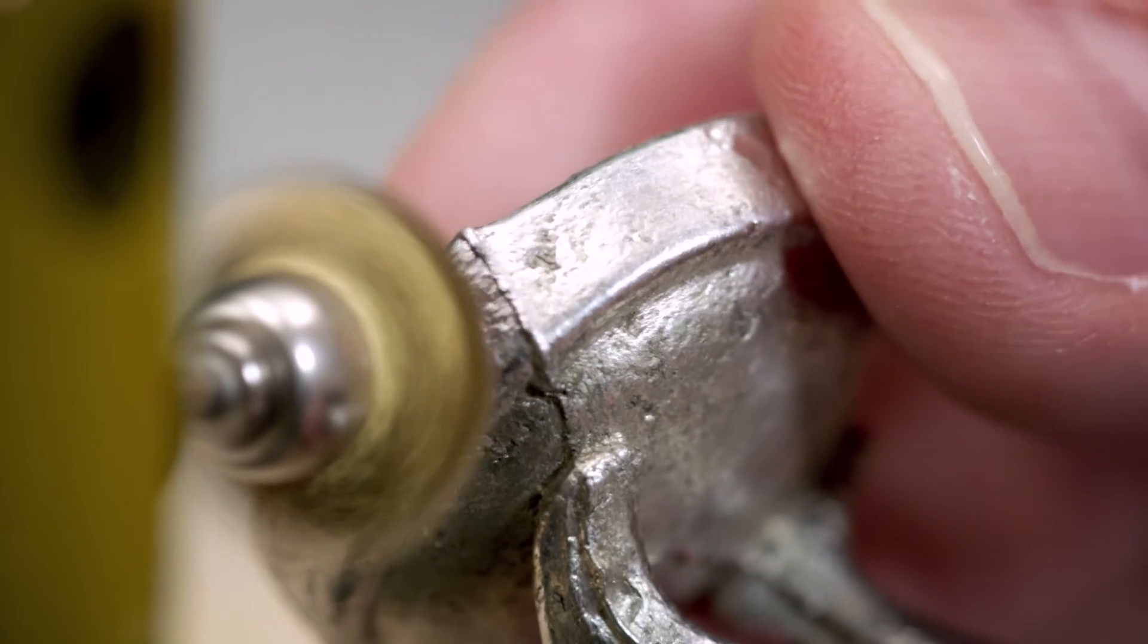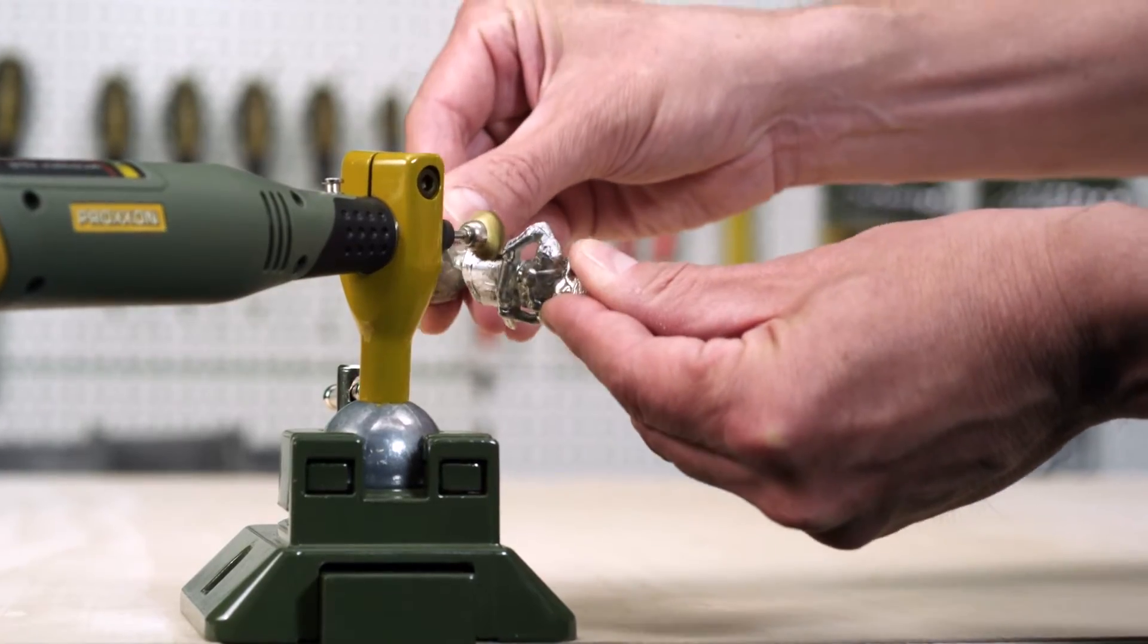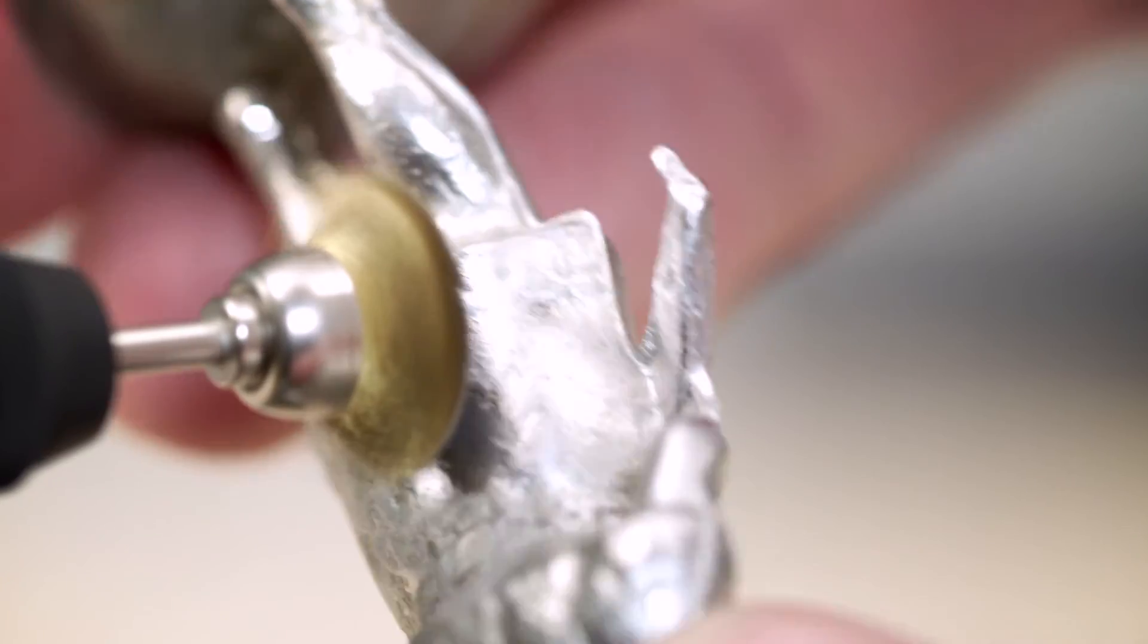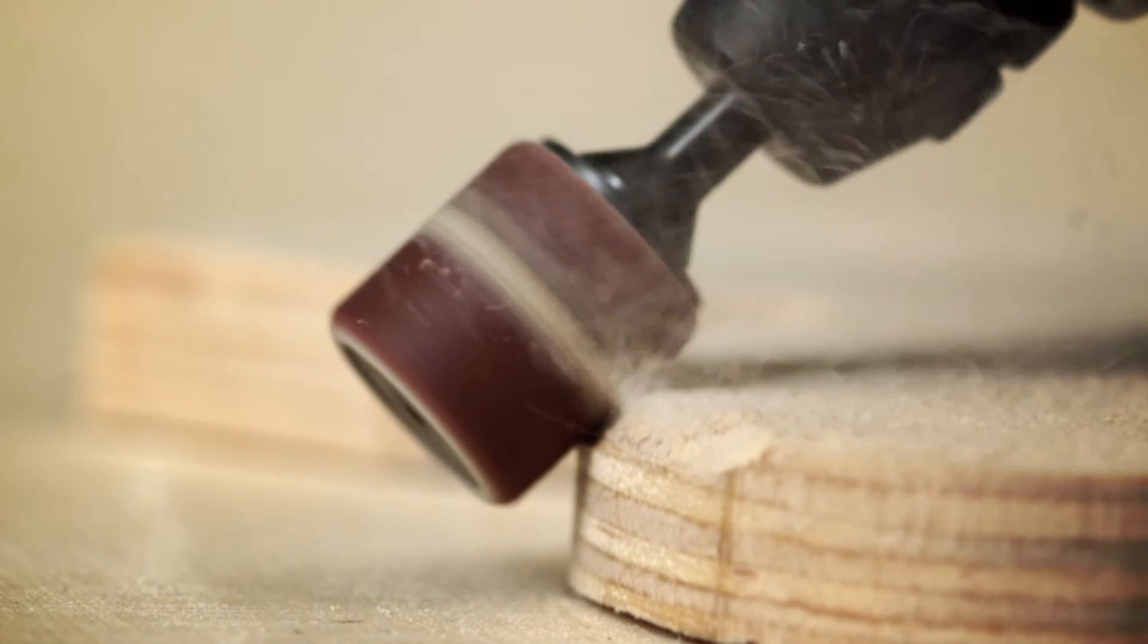The Micromot 230E is not only ideal for fine precision work, but is also suitable for cleaning metals, cutting and grinding applications.